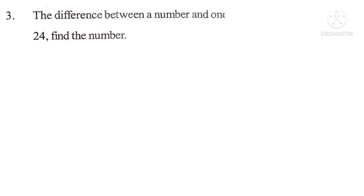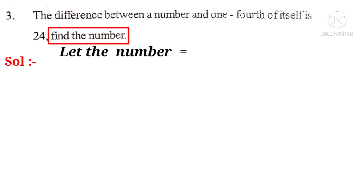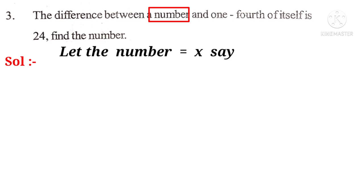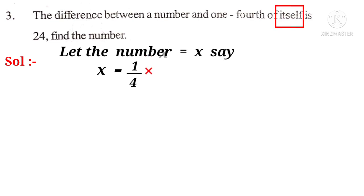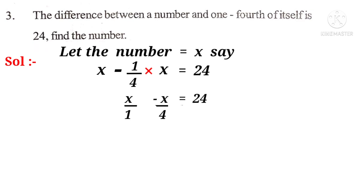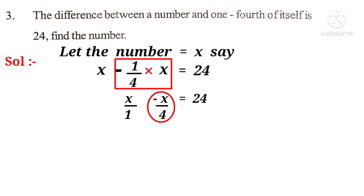Now, third problem. The difference between a number and one-fourth of itself is 24. Find the number. Solution. The number is unknown. So, let the number be equal to a variable x. The word difference indicates the operation minus. The word one-fourth indicates 1/4, and itself indicates the number x. Is 24 indicates equal to 24. Now, it can be written as x/1 - x/4 = 24.